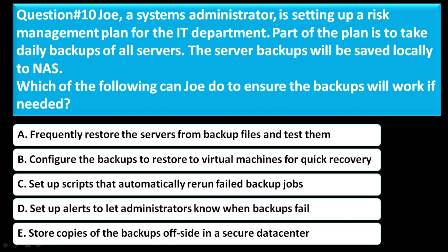Question number 10: Joe, a systems administrator, is setting up a risk management plan for the IT department. Part of the plan is to take daily backups of all servers, saved locally to NAS. Which of the following can Joe do to ensure the backups will work if needed? Option A is frequently restore the servers from backup files and test them, Option B is configure backups to restore virtual machines for quick recovery, Option C is set up scripts that automatically retry failed backup jobs, Option D is set up alerts to notify administrators when backups fail, Option E is store copies of backups off-site in a secure data center. The correct answer is A — frequently restore the servers from backup files and test them.